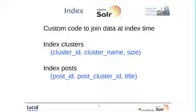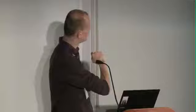Okay, the indexing. Like I said, I had to do some custom coding to join the data together. My clustering results and the original data. And then index it. So what I did is I created basically two different kinds of documents. The clusters with the cluster ID, the name and the size. The number of documents in it. And the posts. Like the post ID, the cluster ID, which is the same as the cluster ID actually, so you can join them together, and the title.